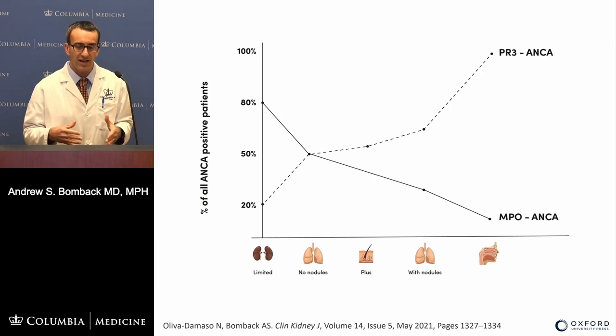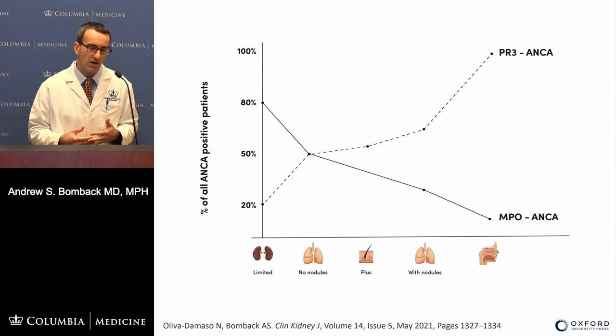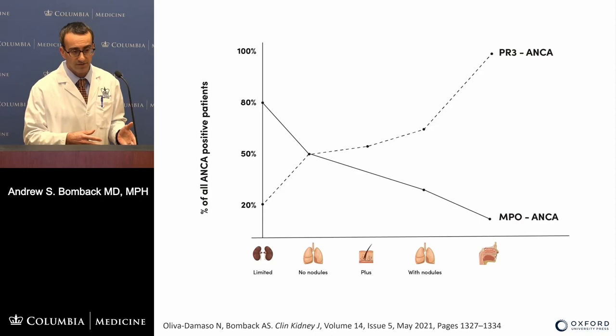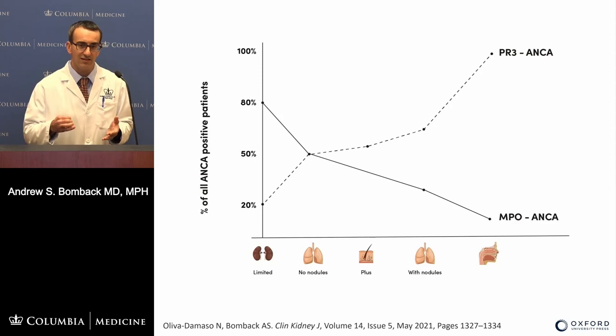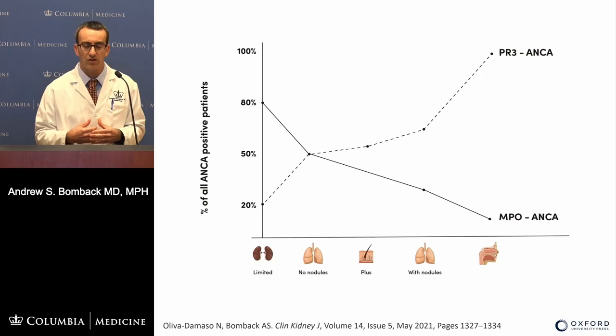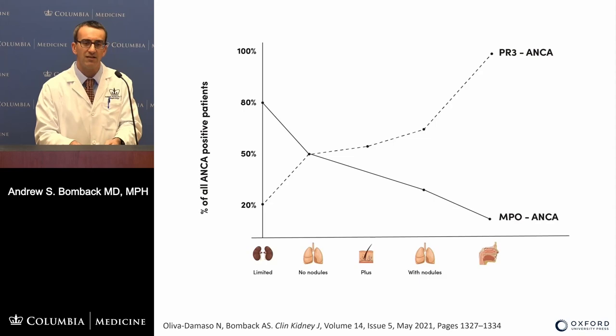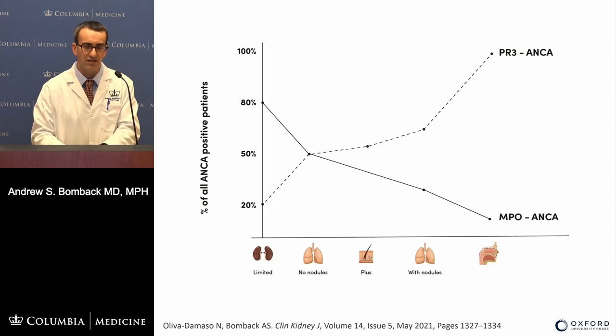The type of ANCA influences phenotype and clinical scenarios, and it will influence your decision-making in maintenance therapy. PR3 ANCA has a greater chance of response to induction therapy than MPO ANCA, but PR3 ANCA — especially with sinus, ENT, and lung involvement — has a higher rate of relapse. So even if an MPO patient and a PR3 patient both go negative at six months and are in clinical remission, they are two different patients with different relapse risks, requiring consideration of different maintenance regimens.